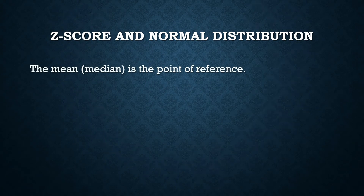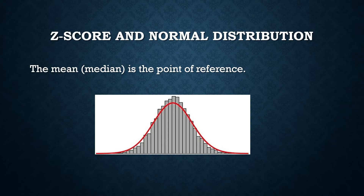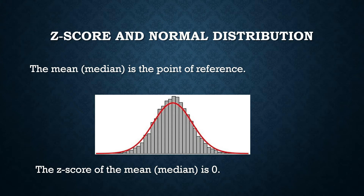The z-score of a data value is the measure of its position in relation to something else. For the z-score, that point of reference is the mean or the median. The mean or median of your data set is given a z-score of zero — zero is the reference point.